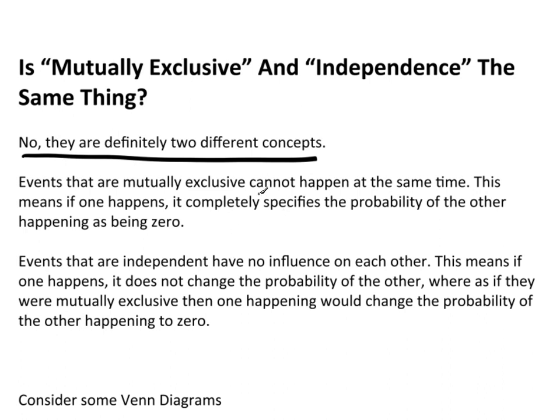Events that are mutually exclusive cannot happen at the same time. This means that if one happens, it completely specifies the probability of the other. So if we have events A and B, and we know they're mutually exclusive, if event A happens, it completely specifies the event of B as being a zero, because it couldn't have happened. So if A happened, the probability of B has to be zero, because they're mutually exclusive.